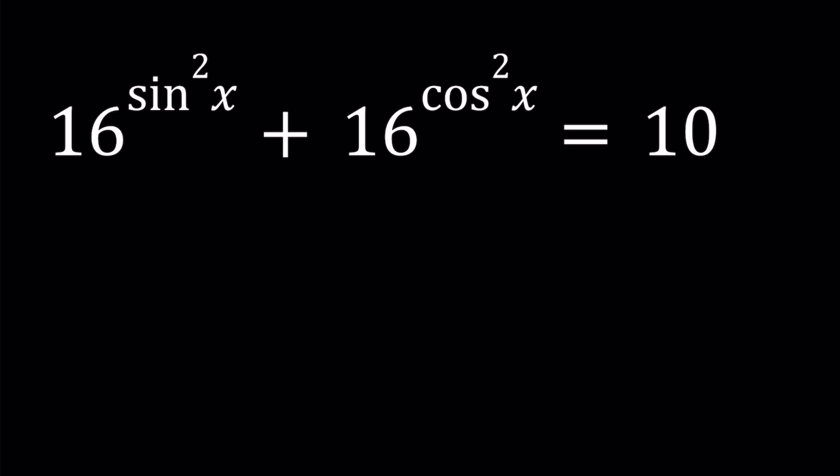Now, for these kinds of questions, when you have something like a to the power f of x plus a to the power g of x equals a constant k, unless you find the relationship between f of x and g of x or use AMGM inequality, these equations are fairly hard to solve. Sometimes you can guess and check, but we're going to find a relationship between these two functions.